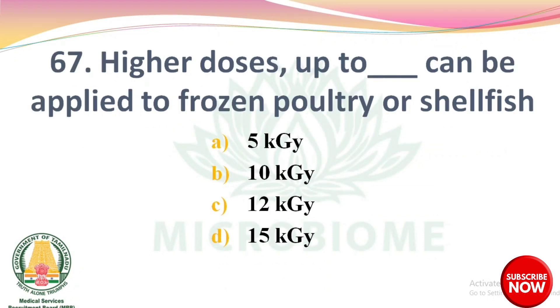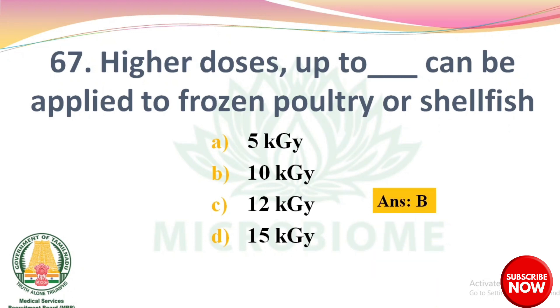Next question: higher doses up to dash can be applied to frozen poultry or shellfish. Options: 5 kGy, 10 kGy, 12 kGy, 15 kGy. The right answer is Option B: 10 kGy.